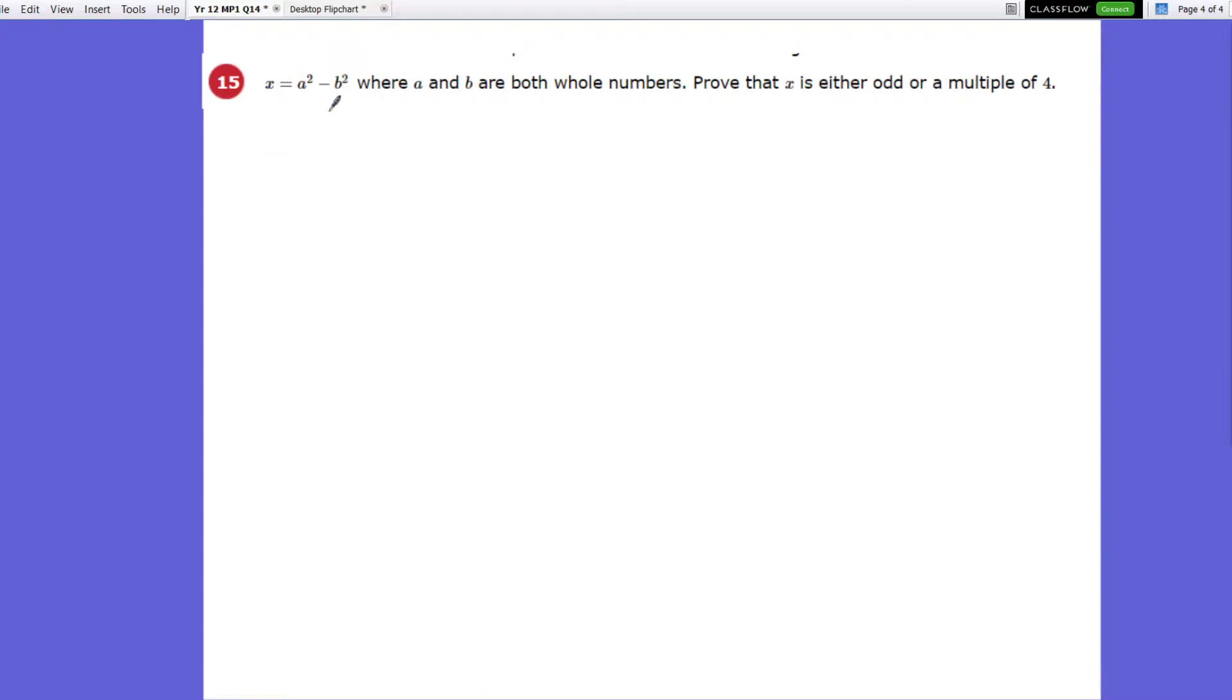Okay, let's start by factorizing this expression. So x is equal to, and it's difference of two squares, you've got a plus b, and you've got a minus b. Now, you've got a scenario here, so let's look at a scenario here, where either a plus b can be even or odd.